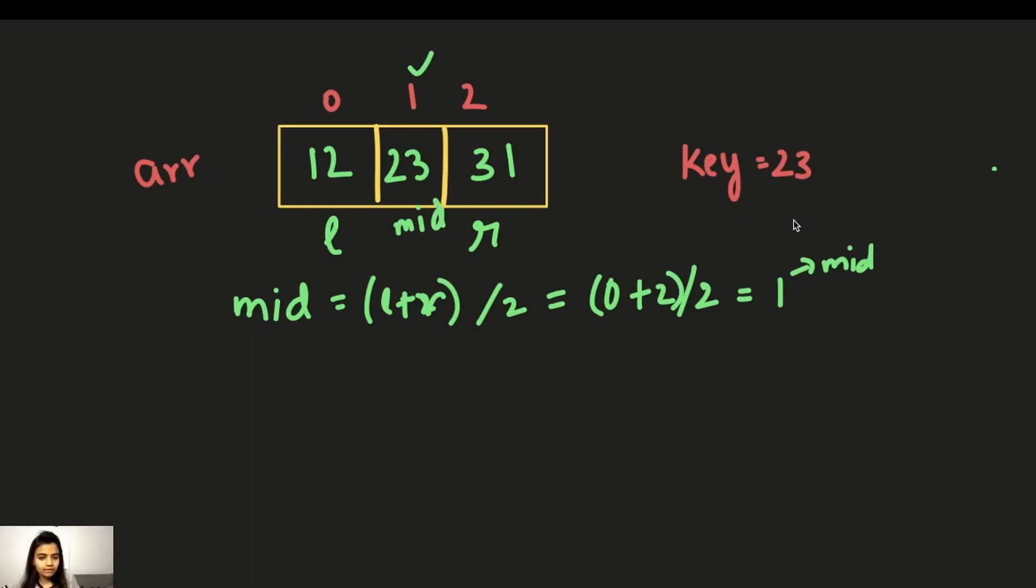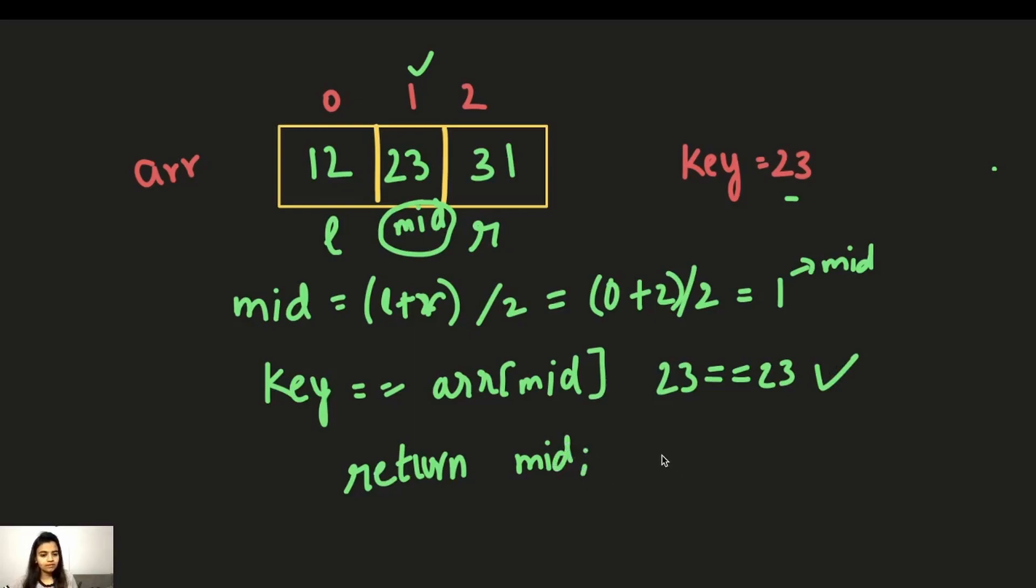Now what we do is compare key whether it's equal to our middle element, which is array of mid. Now key is 23 and array of mid is also 23, so they're equal. Now we have found our key and we just return the mid. Mid is 1. Mid is the index of the element that we found. We return mid and the search is successful.